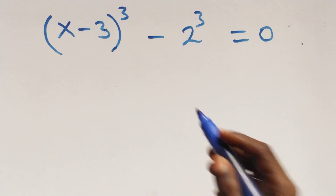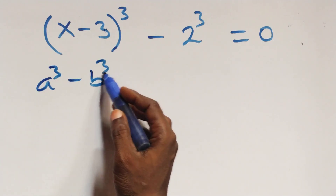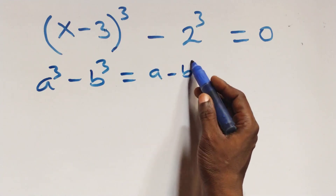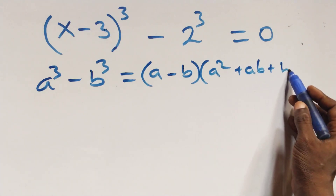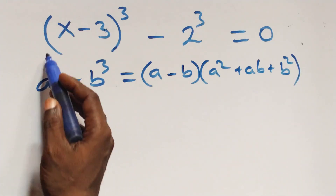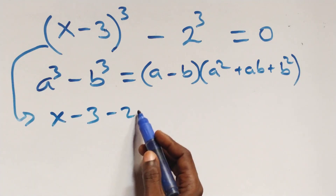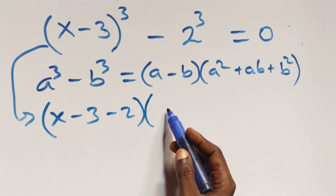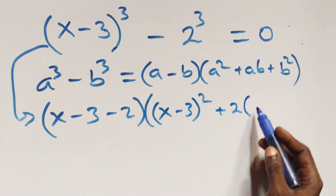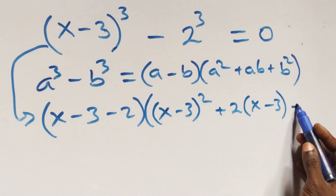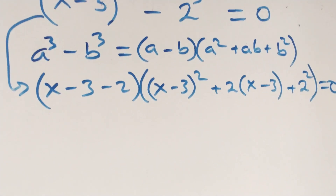Then, solving from the second case here, this follows: when we have a raised to power 3 minus b raised to power 3, it is the same thing as a minus b, into bracket, and open bracket, a square plus ab plus b square, close bracket.